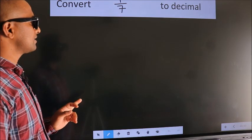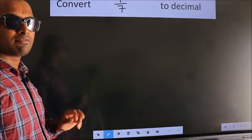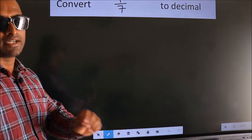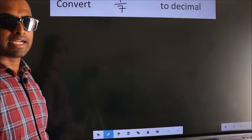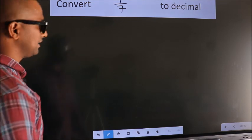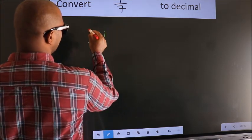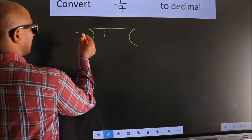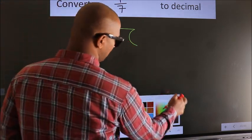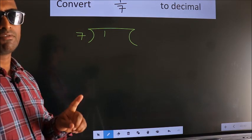Convert 1 by 7 to decimal. To convert this to decimal, we have to divide. And to divide, we should frame it in this way: 1 here, 7 here. This is your step 1.